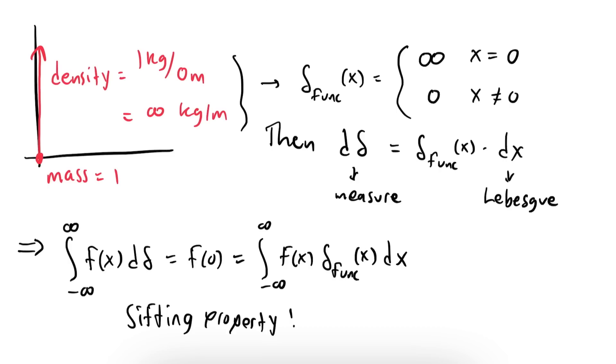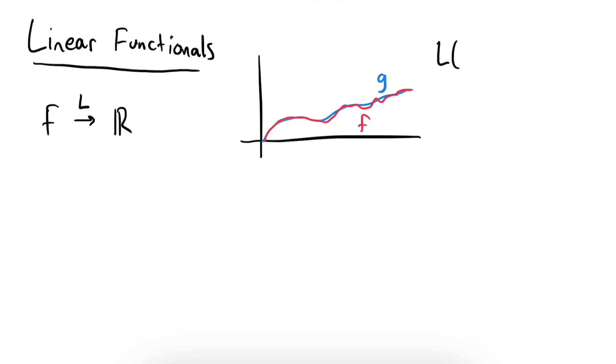But what actually is the Dirac delta if it's not a function? The short answer is that it's a linear functional. A linear functional eats a continuous function and spits out a number in a continuous way. Applying a linear functional is sort of like taking a measurement of a function. You feed it a function, and it gives you back a numerical answer, and measuring two functions which are close should give close numerical answers, which is what it means for a functional to be continuous.